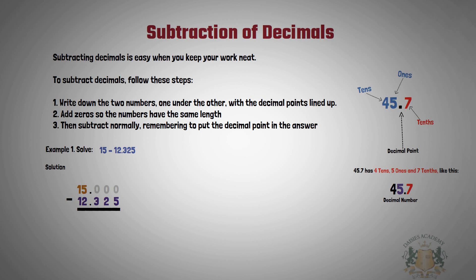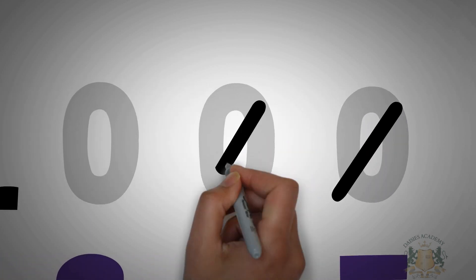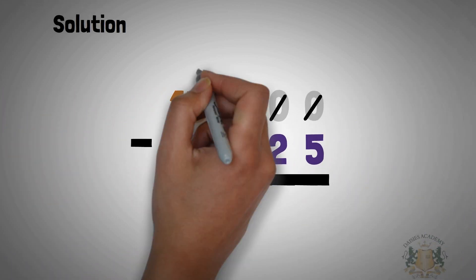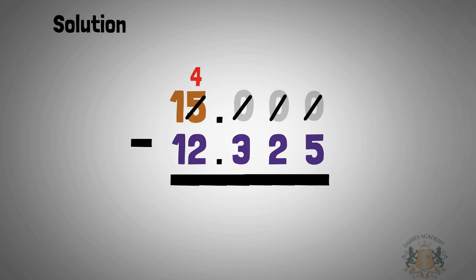Now, if this were a whole number, all you need to do is borrow and then subtract. We're going to use that same step here, putting your decimal point where necessary. Zero minus five is not possible; you come to this zero to borrow — that's not possible. You come to the next zero again to borrow — not possible. So you cross your decimal point and borrow from the five.